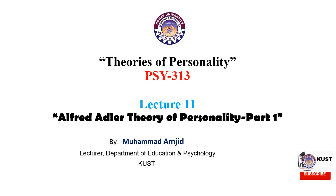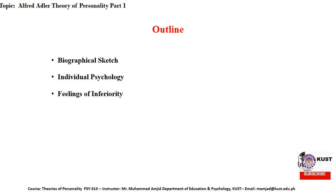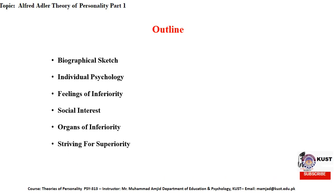This topic is divided into two parts. In today's lecture, we will discuss part 1. Let's see the contents which we are going to discuss. First of all, we will discuss the biographical sketch of Alfred Adler. Then we will discuss his theory of individual psychology. We will discuss his important concepts like feelings of inferiority, social interest, organs of inferiority, striving for superiority, and style of life.